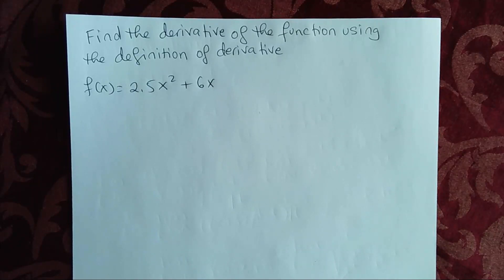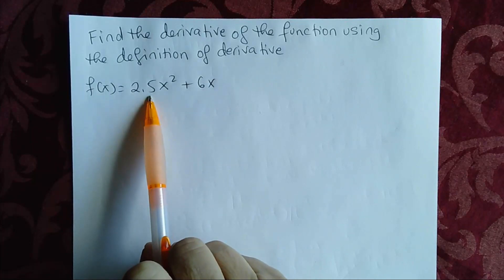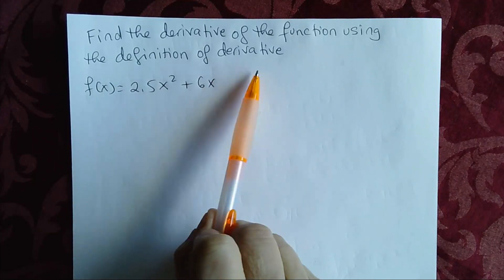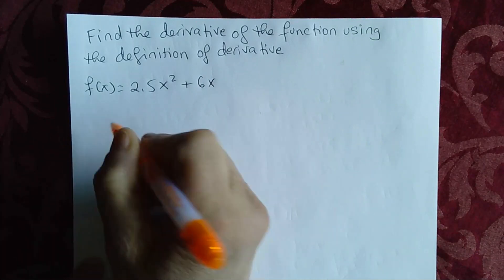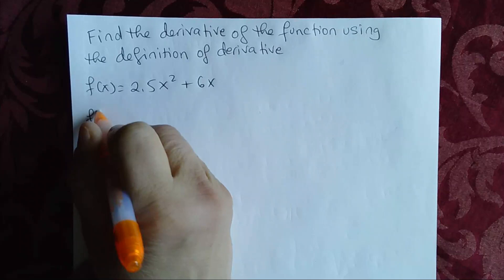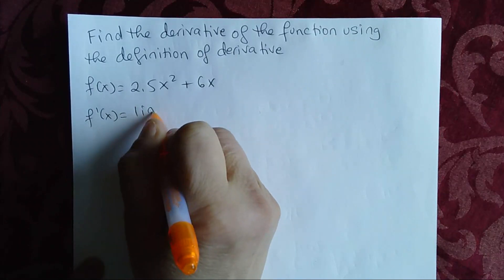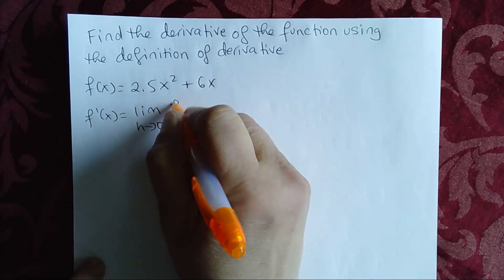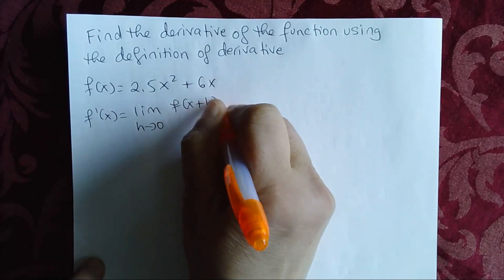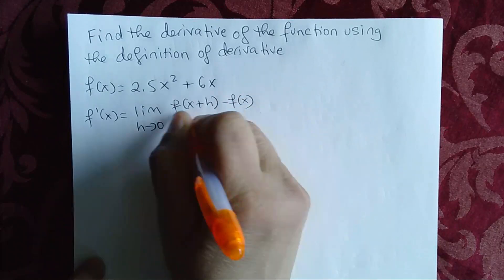Hello everybody, today we're going to find the derivative of this function using the definition of derivative. Using the definition of derivative, f prime of x becomes equal to the limit as h approaches 0 of f of x plus h minus f of x over h.